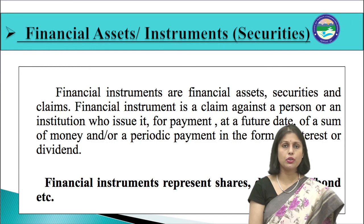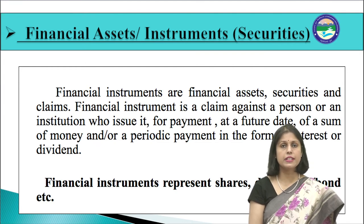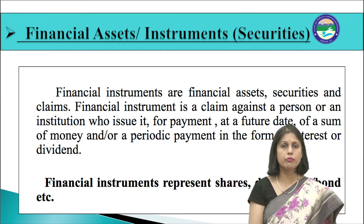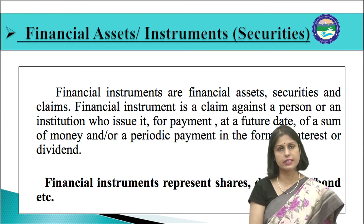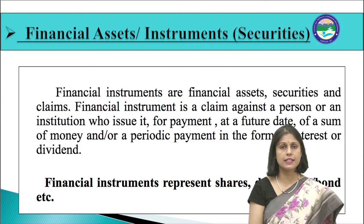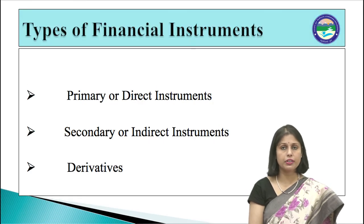The third component of the structure of the financial system is financial assets or financial instruments. A financial instrument is a claim against a person or institution who issues securities for payment at a future date of a sum of money and/or a periodic payment in the form of interest or dividend. Financial instruments represent shares, debentures, bonds, derivatives, etc., and have enabled people to hold a portfolio of different financial assets, which helps in reducing risk. They fall into three broad categories: primary or direct instruments, secondary or indirect instruments, and derivatives.